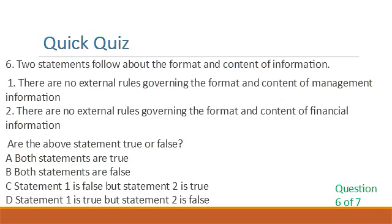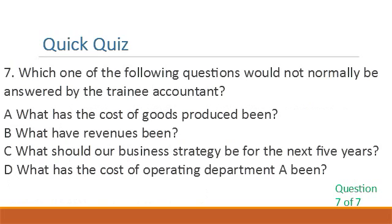Question 6. Two statements follow about the format and content of information: 1. There are no external rules governing the format and content of management information. 2. There are no external rules governing the format and content of financial information. Are the above statements true or false? A. Both statements are true. B. Both statements are false. C. Statement 1 is false but statement 2 is true. D. Statement 1 is true but statement 2 is false. Question 7. Which one of the following questions would not normally be answered by the trainee accountant? A. What has the cost of goods produced been? B. What have revenues been? C. What should our business strategy be for the next 5 years? D. What has the cost of operating department A been?